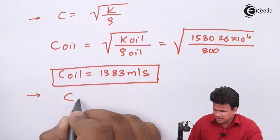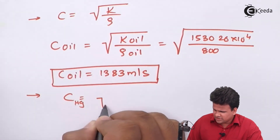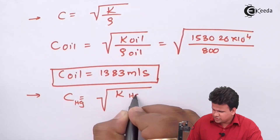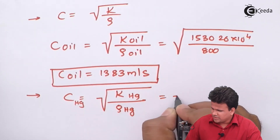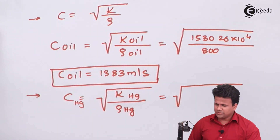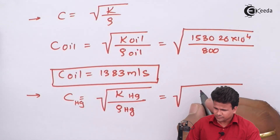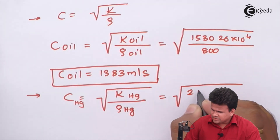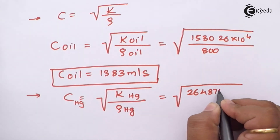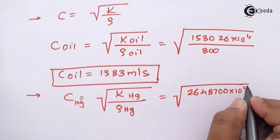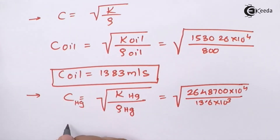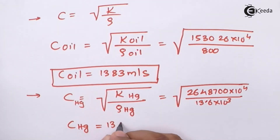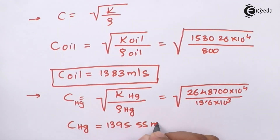Now let us calculate the speed of sound in mercury. C of Hg equals the square root of K of Hg divided by the density of mercury. The bulk modulus is 2648700 into 10 to the power 4, upon the density of 13.6 into 10 to the power 3. On calculation, C of Hg comes out to be 1395.55 meters per second.